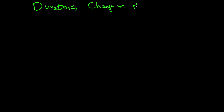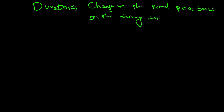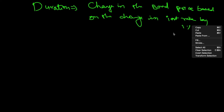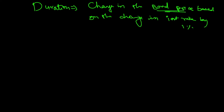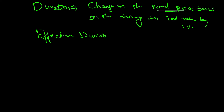Duration refers to the change in bond price based on the change in the interest rate by one percentage. That means if a one percentage interest change happens, how much the bond price will change — that is duration. Effective duration is used for bonds with embedded options, that is callable and putable bonds, so effective duration is for embedded option bonds.